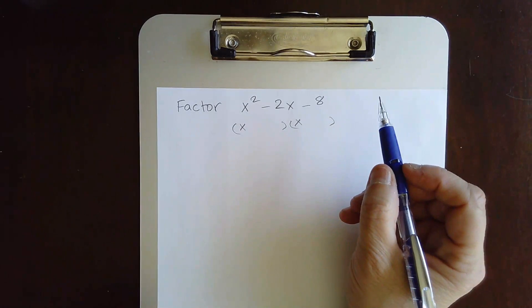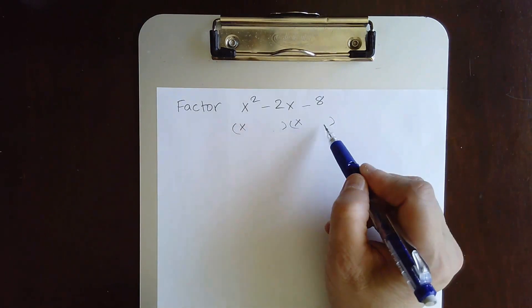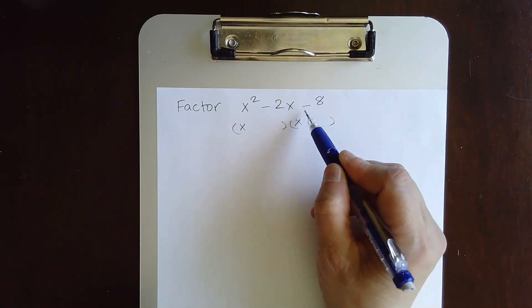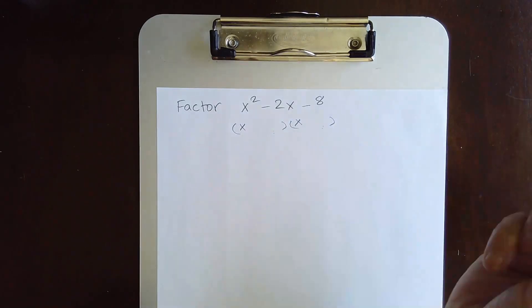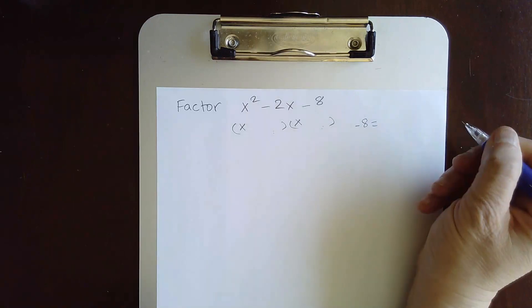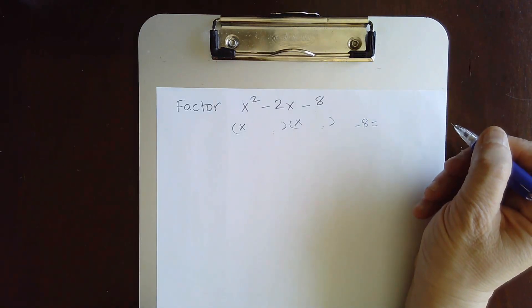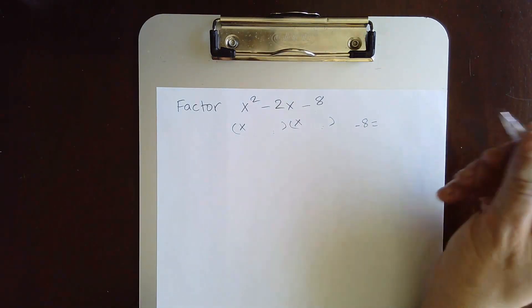And we need to find two numbers here whose product is negative 8 but whose sum is negative 2. So since the product is negative 8, one of them must be positive and one of them must be negative. You have two options.